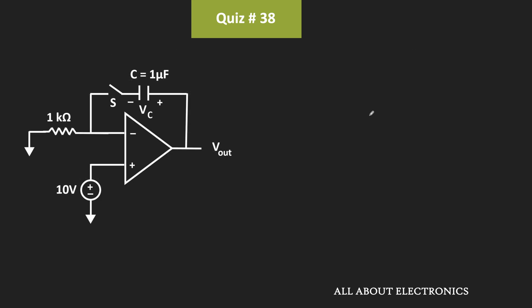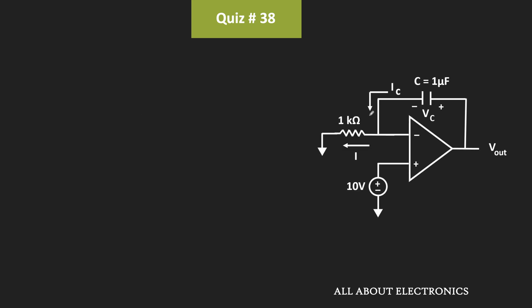So in this circuit, once we close the switch, the circuit will look like this. Let's say the current flowing through the capacitor is IC, while the current flowing through the 1kΩ resistor is I.